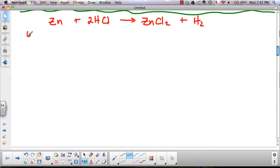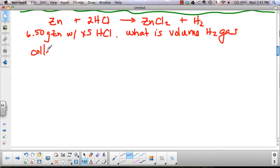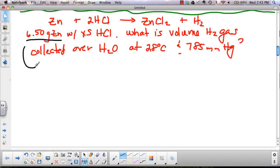So we're going to say that 6.5 grams of zinc is going to react with an excess of HCl. And we want to know what is the volume of the hydrogen gas collected over water at 28 degrees Celsius and 785 millimeters of mercury. So the point of this question is we're going to start with grams and we're going to convert it doing some stoichiometry to moles of hydrogen.